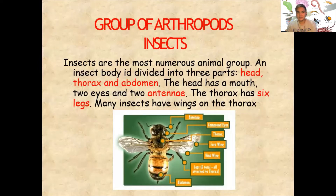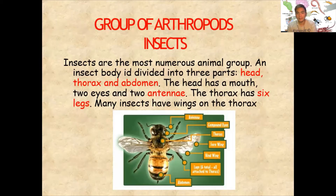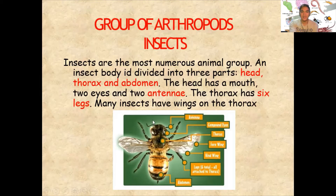Insects are the most numerous animal group. An insect body is divided into three parts: the head, the thorax, and the abdomen. The head has a mouth, two eyes, and two antennae. The thorax has six legs, and many insects have wings on their thorax.